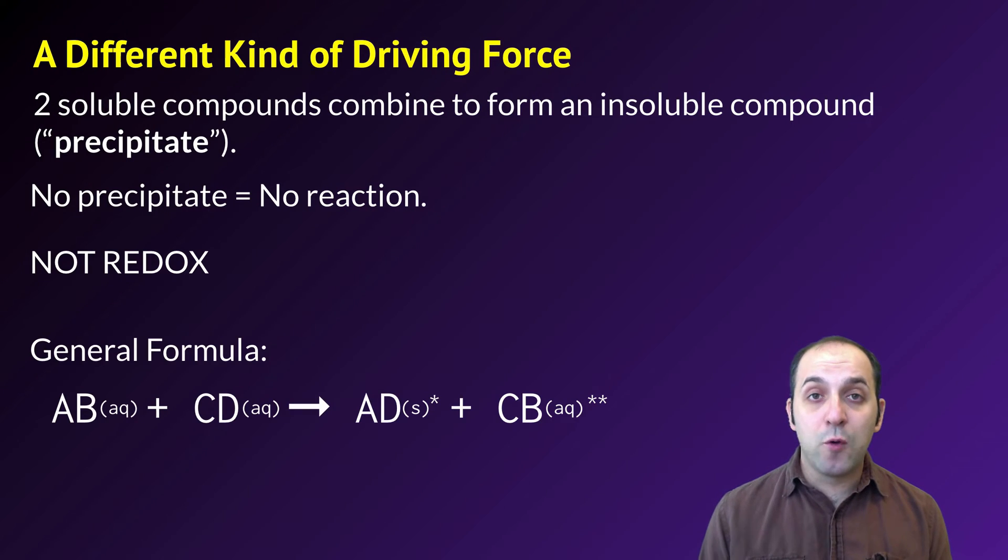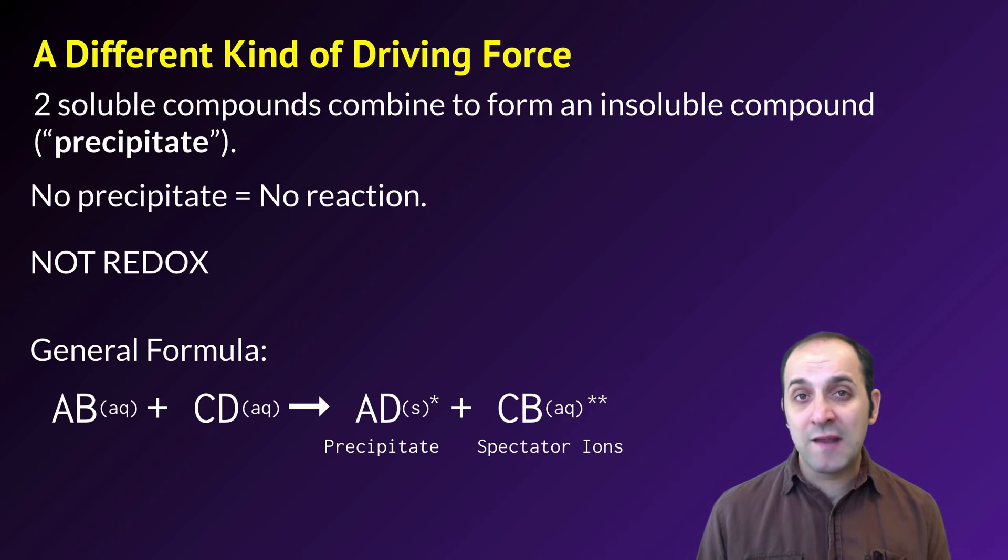The general formula for a double replacement reaction is as follows. Two dissolved substances, which I've written here as AB and CD in aqueous solution, are going to combine to produce a precipitate, which I've written here as AD as a solid, and two other ions which will remain in solution, which are called spectator ions. Remember that spectator ions in a redox reaction had no change in their oxidation state. That's different than spectator ions in a double replacement reaction, where no change in oxidation state is ever seen. The spectator ions in a double replacement reaction just remain dissolved in the solution.